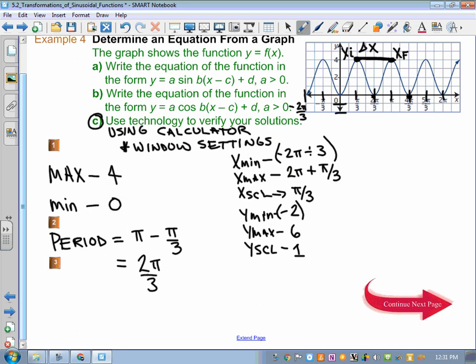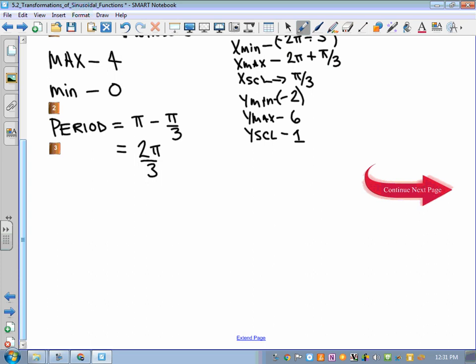Now, armed with that information, we can use those formulas we have for our A value, which is max minus min over 2. The D value, which is max plus min over 2, and the B value, which is 2 pi divided by the period. That is a manipulation of the formula that we've used in 5.1.